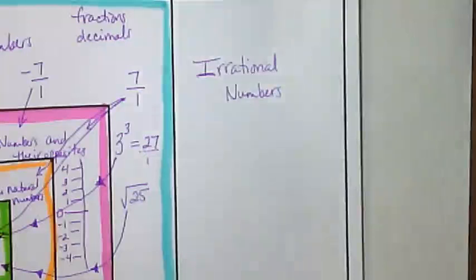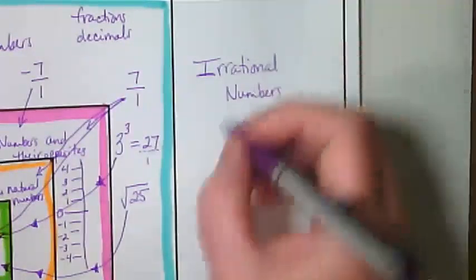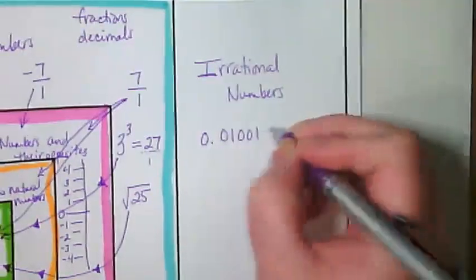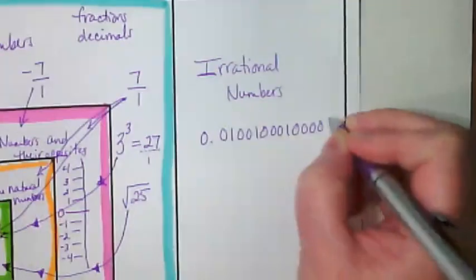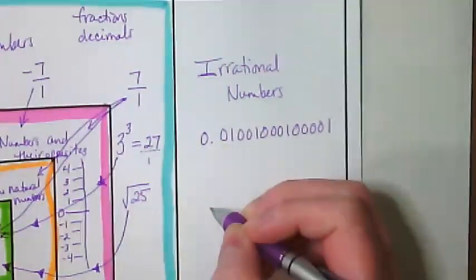The reality with irrational numbers is we could visualize where about on a number line they are. They are typically, they are always going to be in between two numbers, but we can't necessarily pinpoint exactly where. Because these are things with decimals that go on and on and on. So non-repeating decimals.